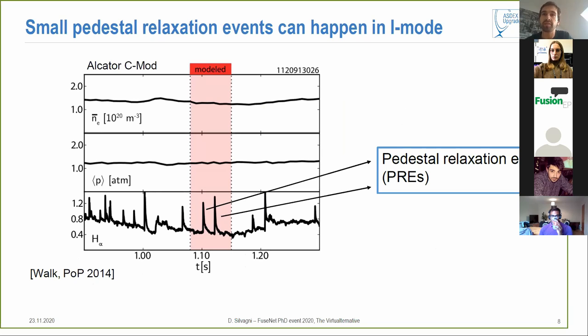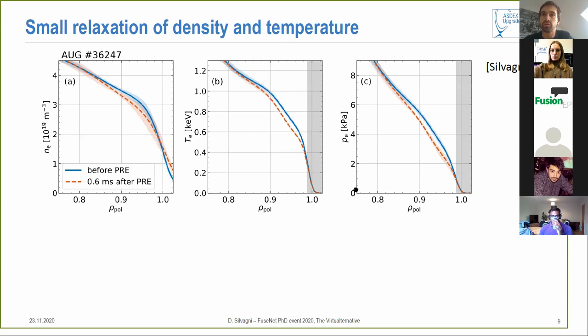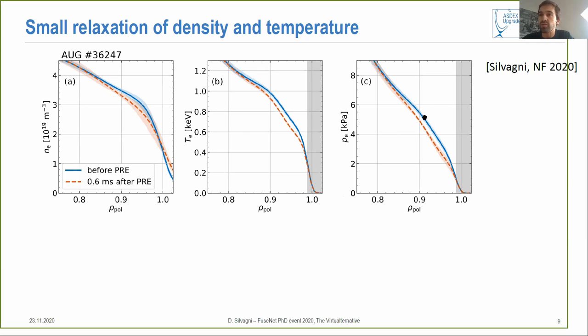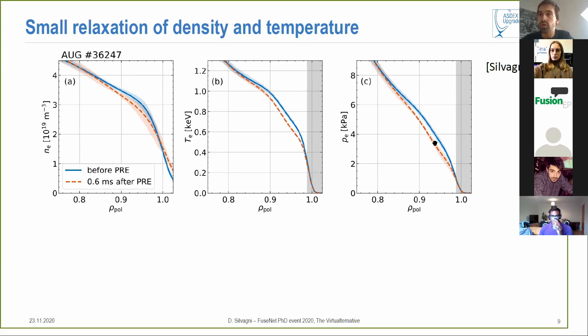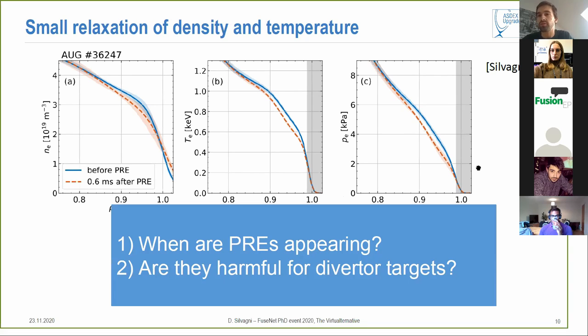Okay so now everything is good, we know how to access I-mode, but sometimes there can be some small pedestal relaxation events happening in the I-mode. An example has been first seen in the Alcator C-Mod tokamak and here you see the increase of energy and particle in the scrape-off layer region. We will refer to these events as PREs in short. In ASDEX we are seeing that these events cause a relaxation of the density and temperature profile. As you can see here in blue you have the profile before and in orange you have the profile after and you see that this reduces a bit.